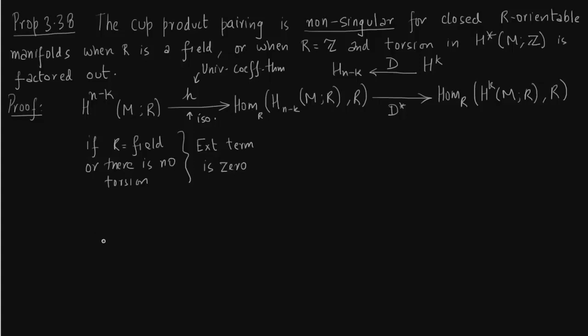So if R is a field or there is no torsion with R as integers, then the Ext term is 0 and that will make h an isomorphism. So by universal coefficient theorem this map h is now becoming an isomorphism. So now we can see the duality pairing, we have to go from H^(N-K) to homomorphisms from H^K to R.